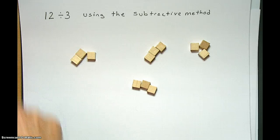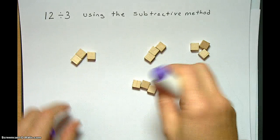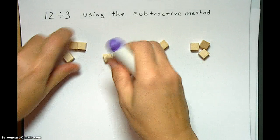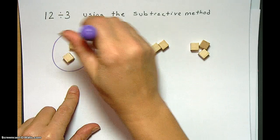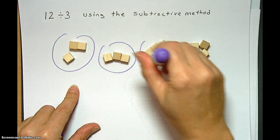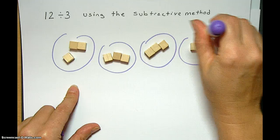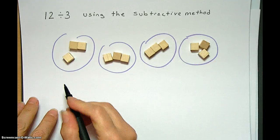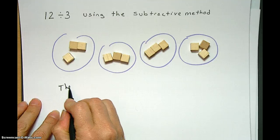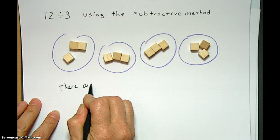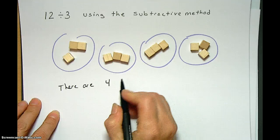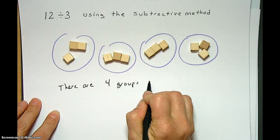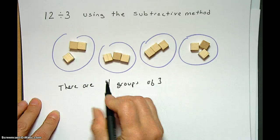So here we see that 12 divided by 3 gives us 1, 2, 3, 4 groups of 3. There are 4 groups of 3.